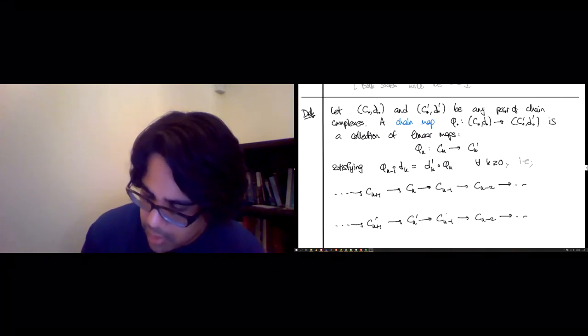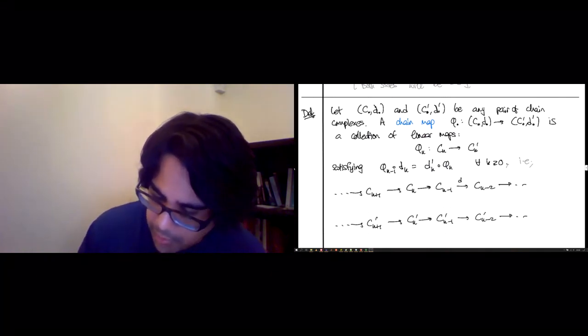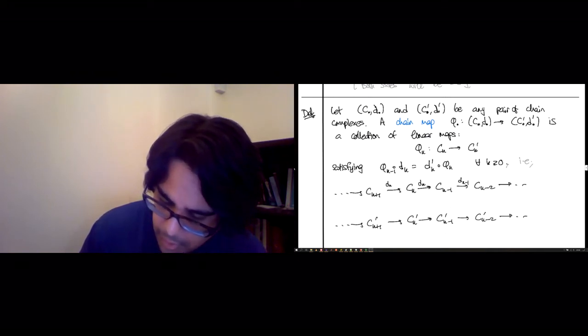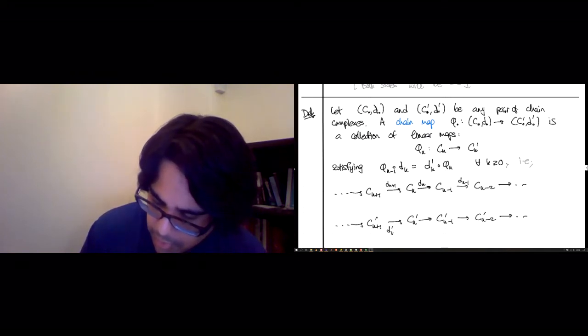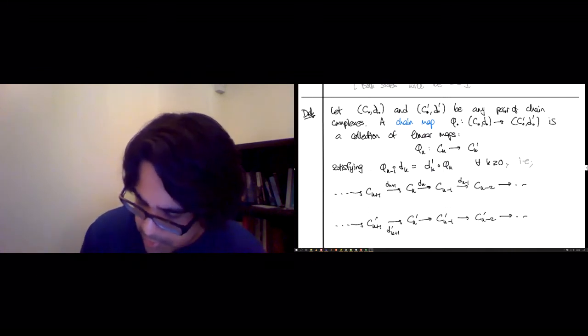is that you have this chain complex C_k hovering upstairs, going on and on and on. And you have this same thing with C' hovering downstairs, going on and on and on.